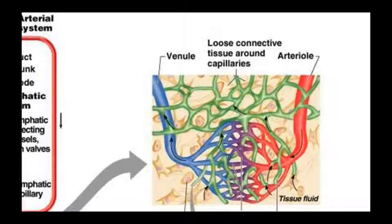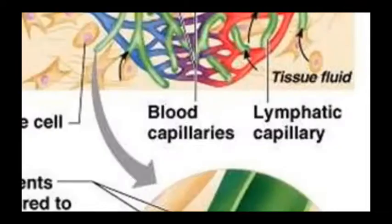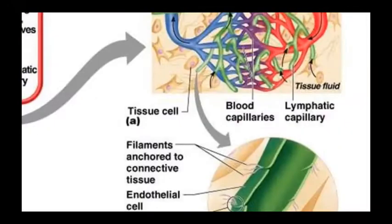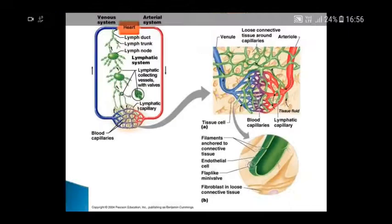The lymphatic system is associated with blood vessels. Tissue fluid provides substances to cells via tissue fluid. Blood capillaries and lymphatic capillaries are shown, along with tissue cells. This part is anchored from the connective tissue. The filament is attached to the connective tissue. This shows endothelial cells, flap-like mini valves, fibroblasts, and loose connective tissue in the diagram.